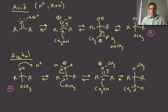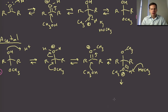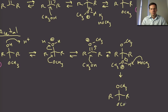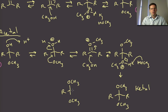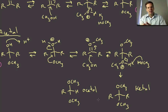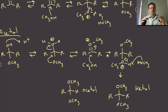This oxocarbenium ion is directly analogous to the earlier one — it's just that now it has an alkyl substituent instead of a proton, but it's equally reactive. Methanol adds to this oxocarbenium ion, giving us an intermediate with a positive charge. Then we simply deprotonate, just like in hemiketal formation, to get our final product — a ketal. If we had done this on an aldehyde with a hydrogen, it would be called an acetal. So: hemiacetal, acetal, hemiketal, ketal.